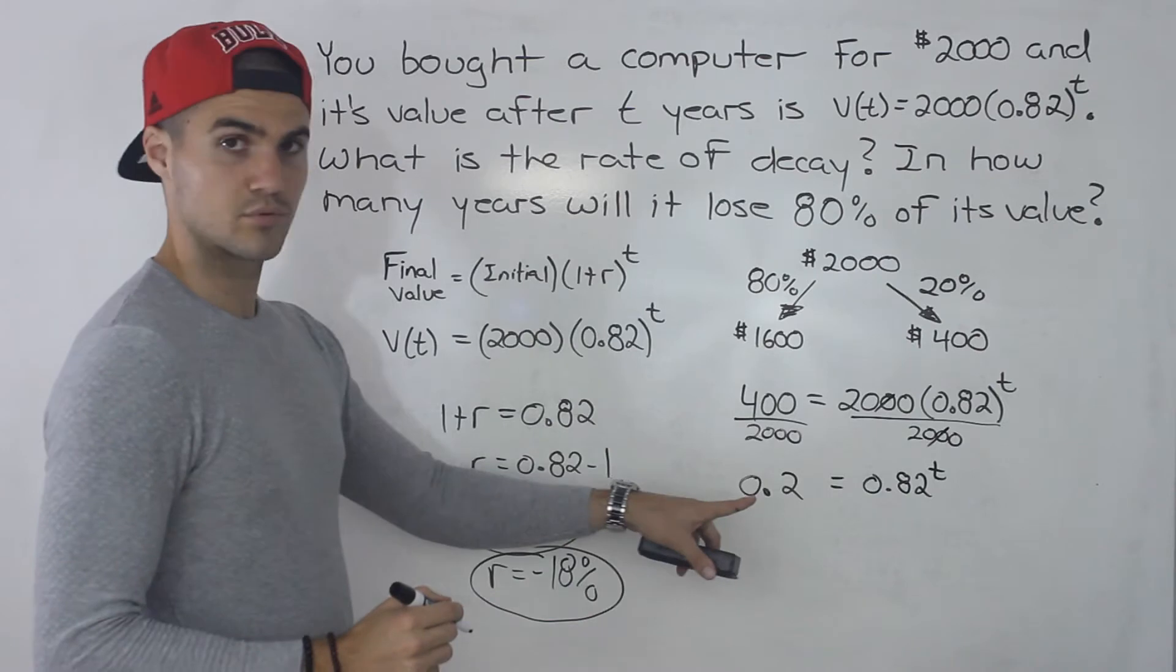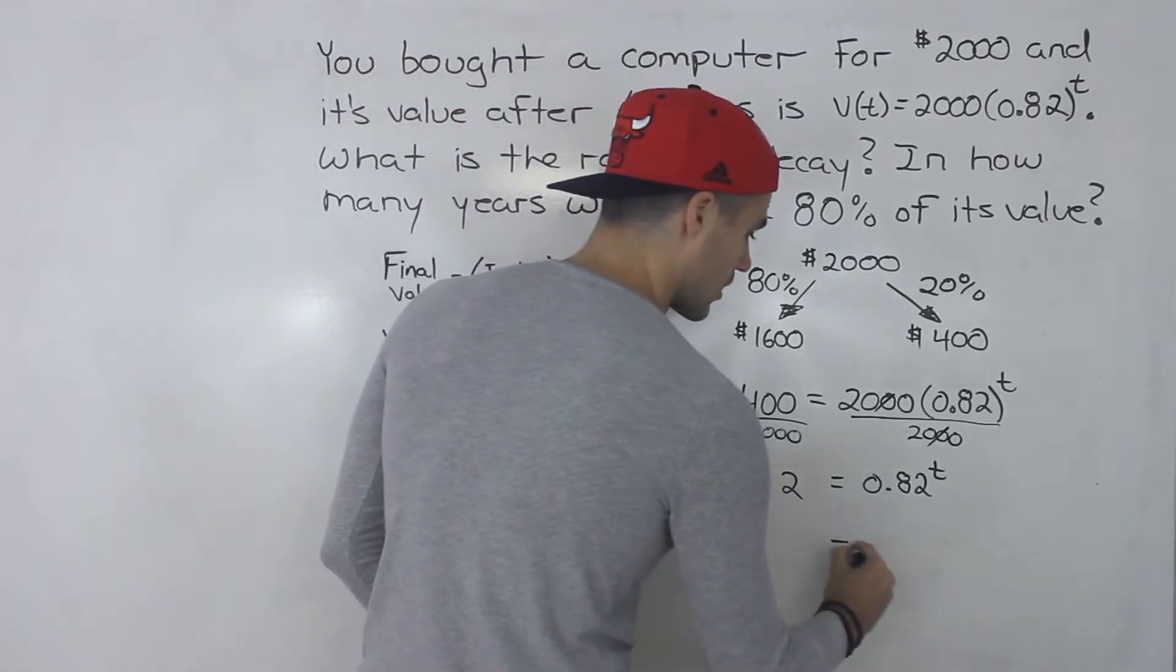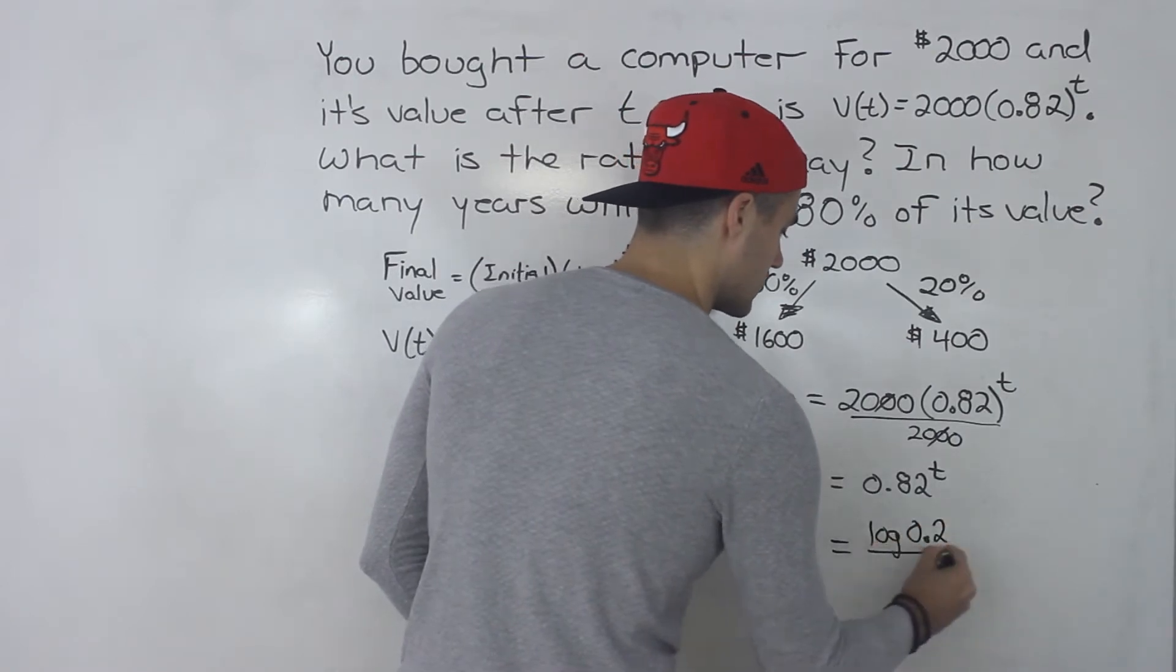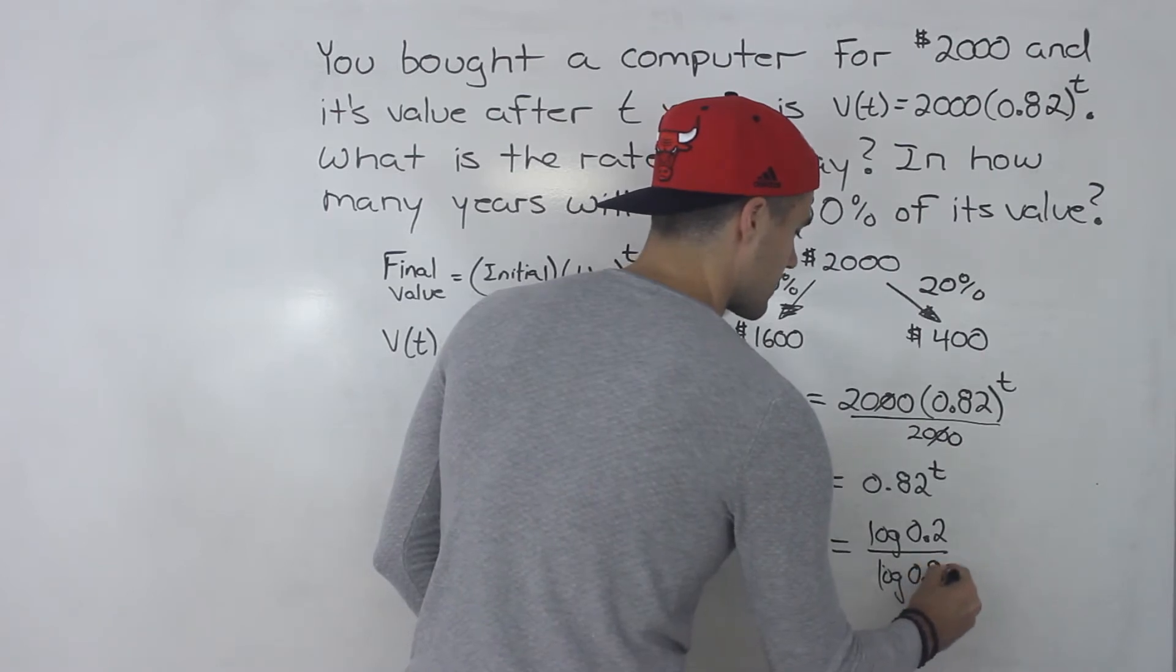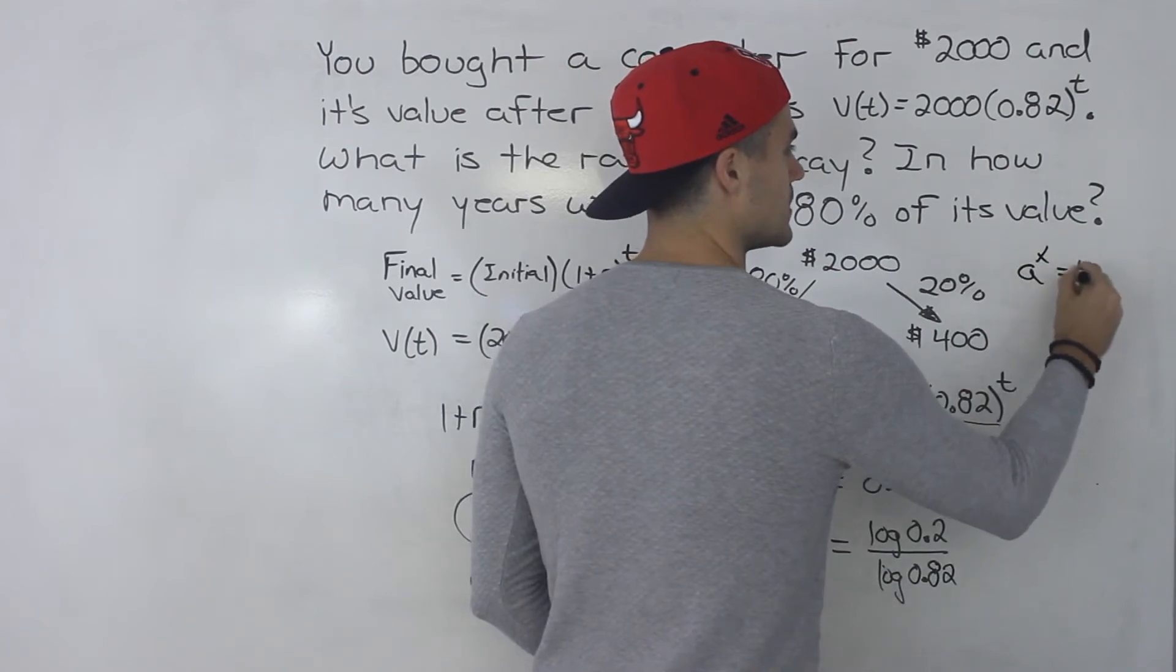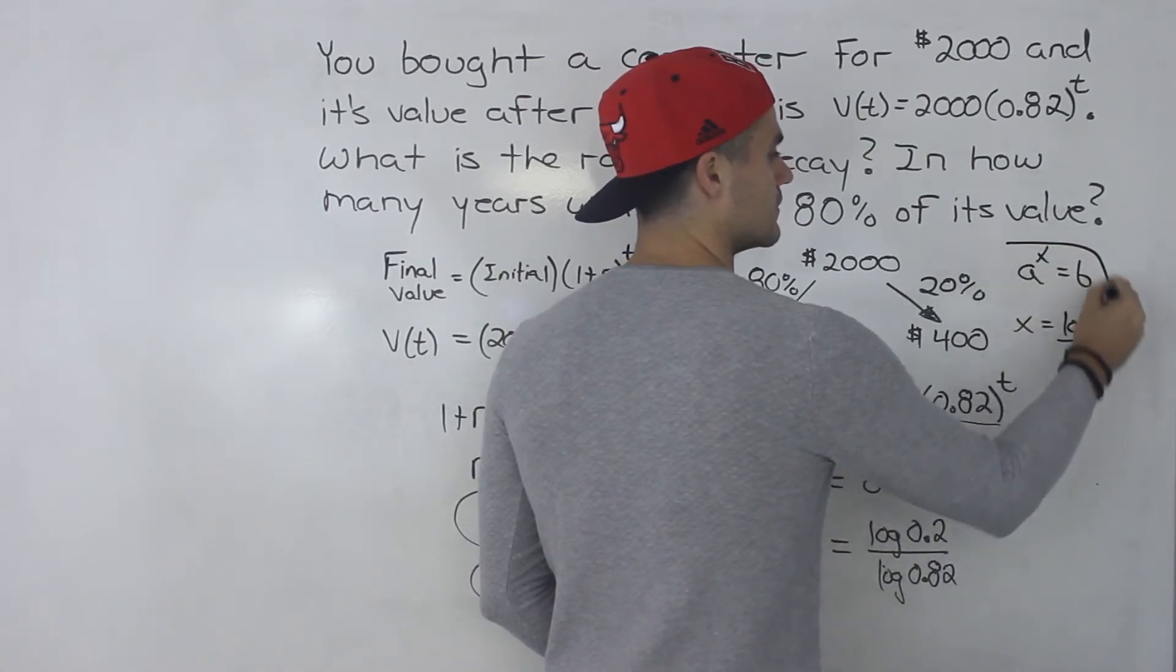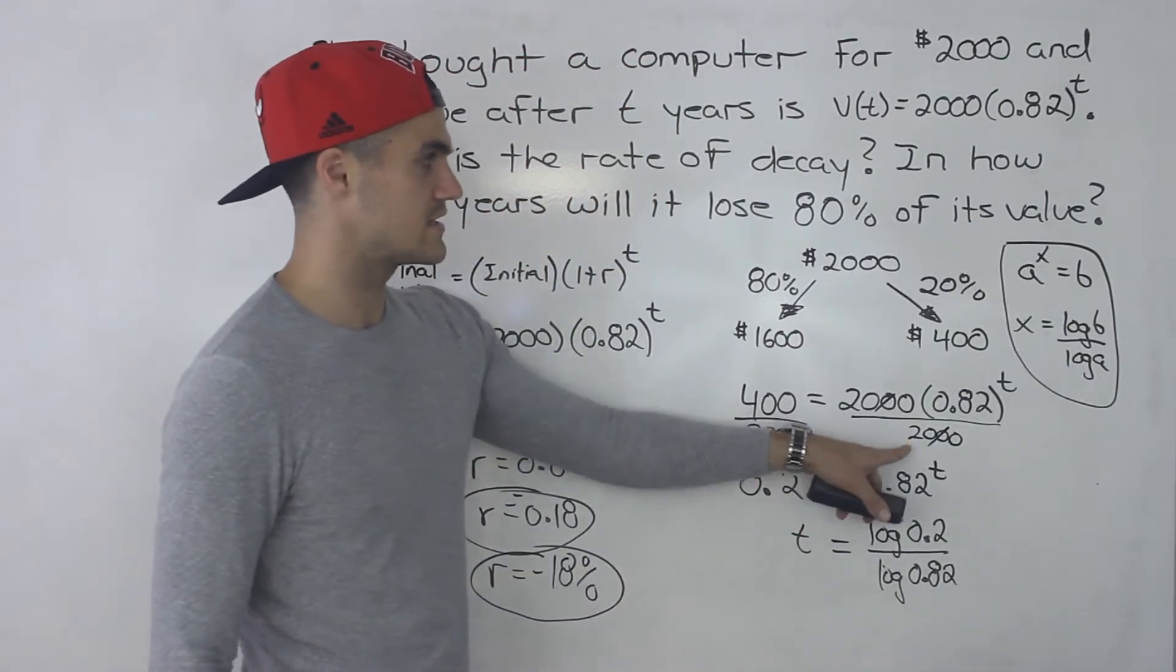And if you remember from previous videos when you're solving for a variable in the exponent you could just log both sides. So basically the t value would be log of 0.2 over log of 0.82. In general, if you got a to the x is equal to b and you want to isolate for the x, x is just equal to log b over log a. So we applied this formula here to solve for that t value. Here we were isolating for the x, here we're isolating for the t in the exponent.